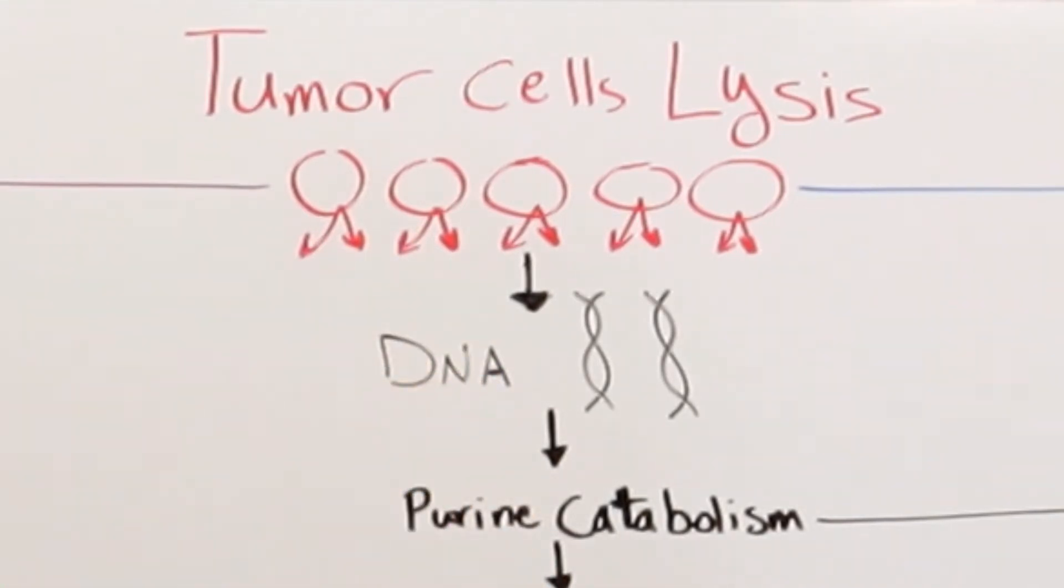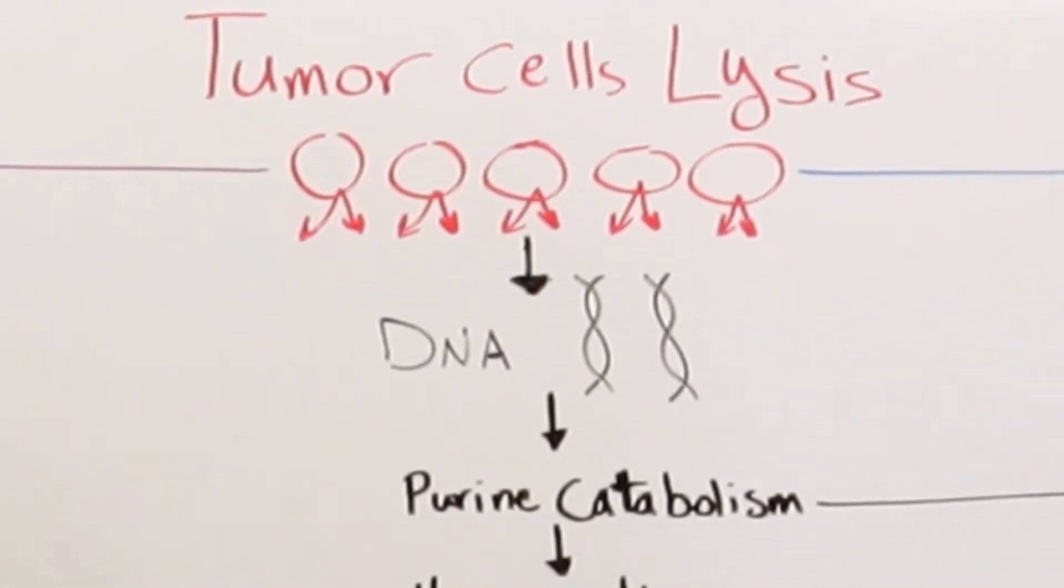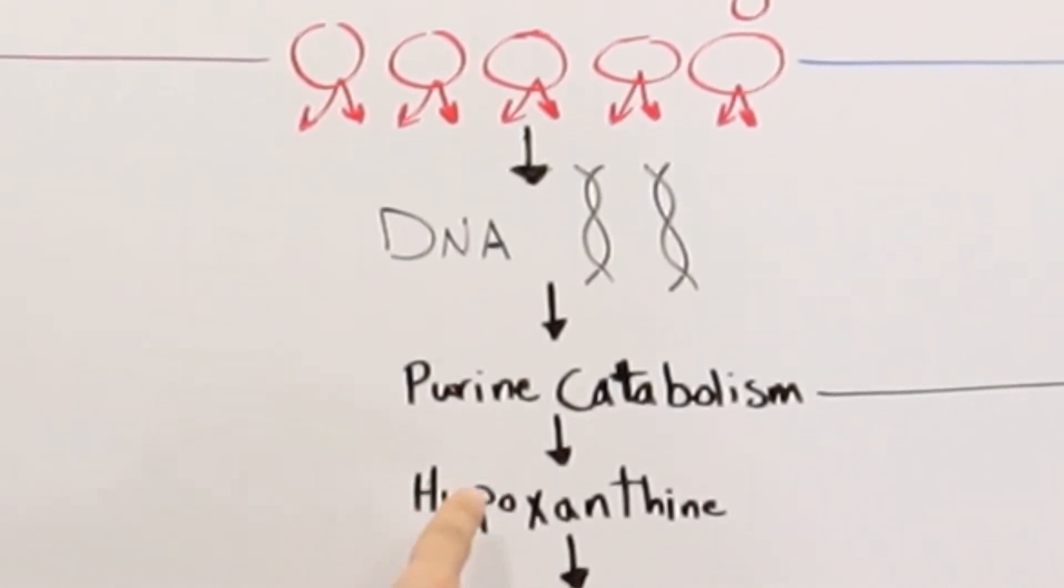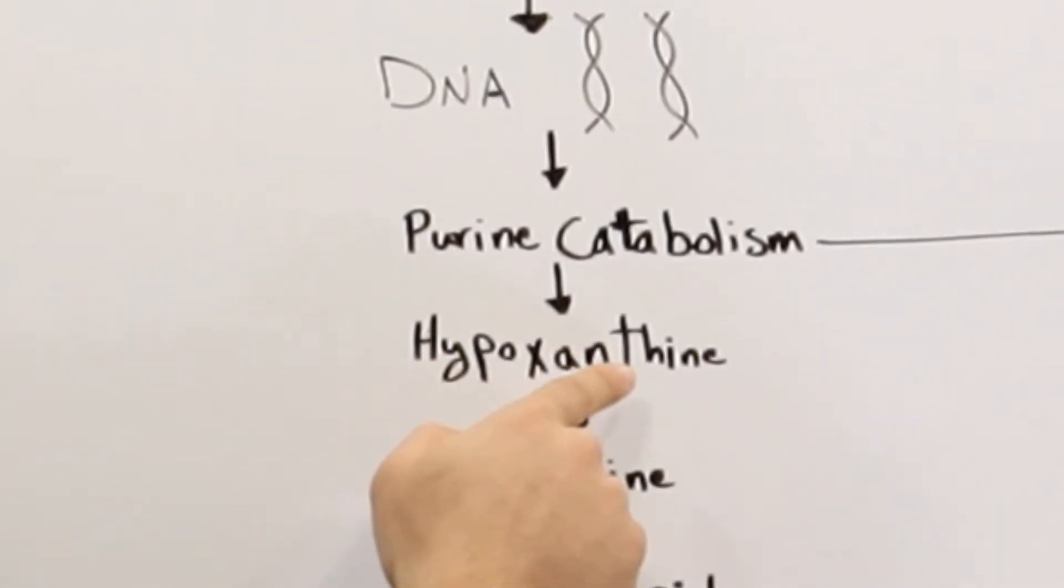Part of these components is the DNA, and part of the DNA is purine. Through the process of purine catabolism, which is basically the breaking down of large molecules into smaller ones, we end up having hypoxanthine.